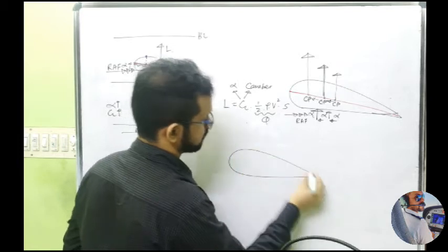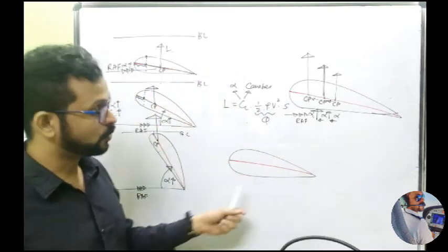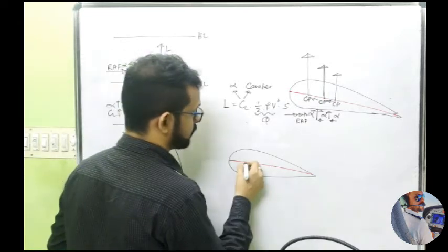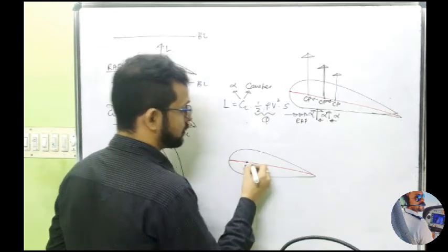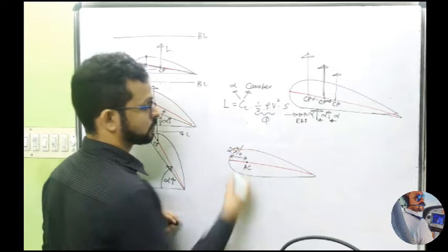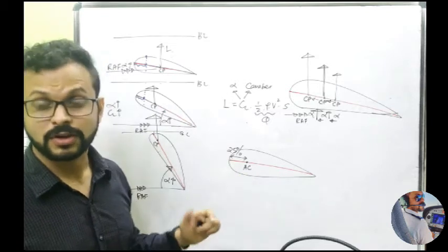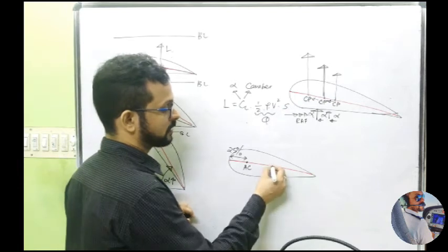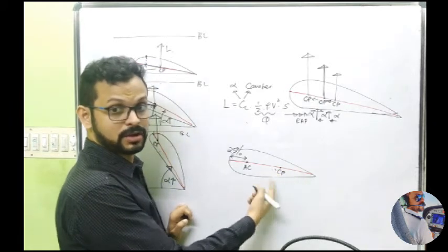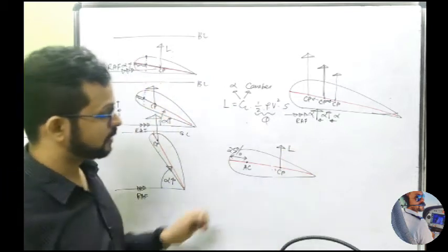Let's see the aerodynamic center with the same idea of CP moving forward with increase in angle of attack. This is the chord again. We assume a point called the aerodynamic center. For a normal jet aircraft, the aerodynamic center is around 25 percent of the chord. We express distances on the basis of percentage of chord line, so the aerodynamic center is somewhere around 25 percent of the chord line. We have the CP here — it's the point from where the entire lift is assumed to act.